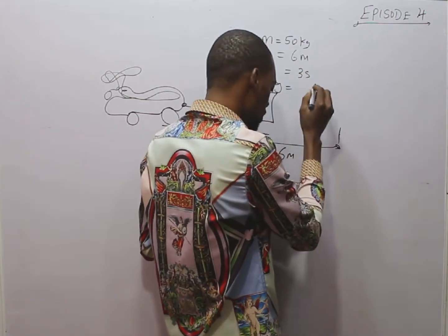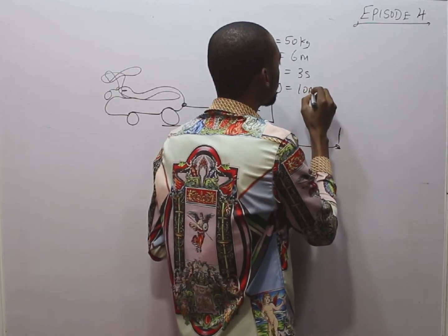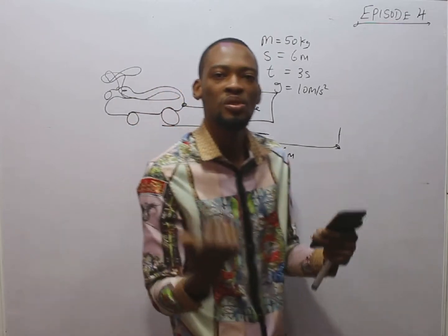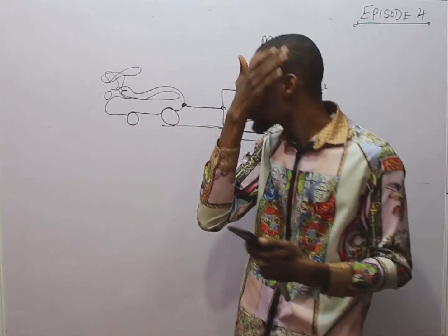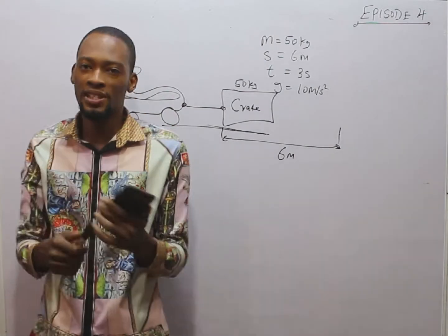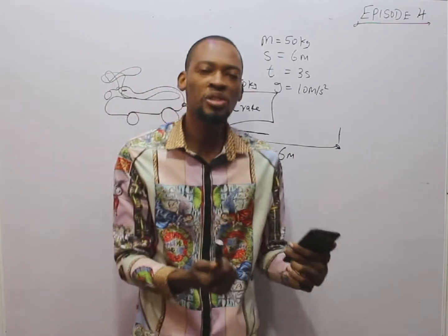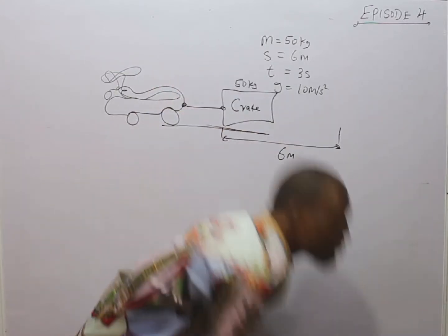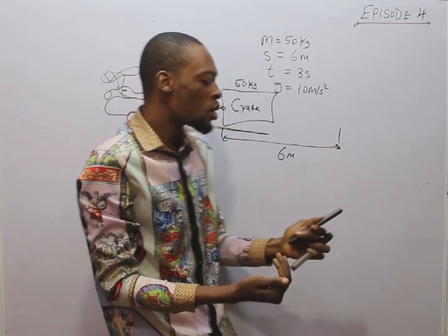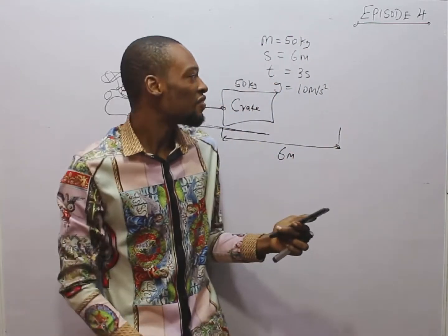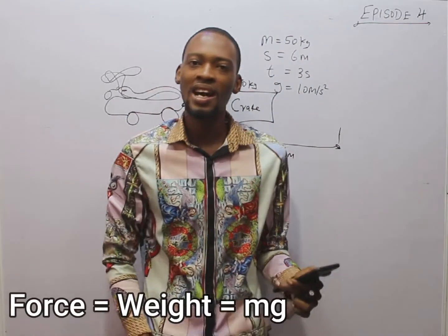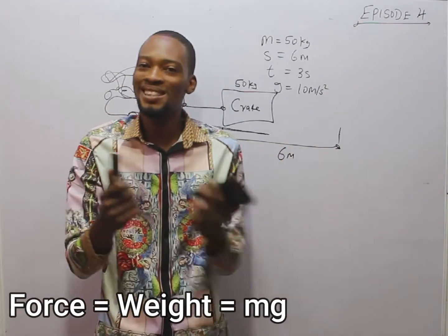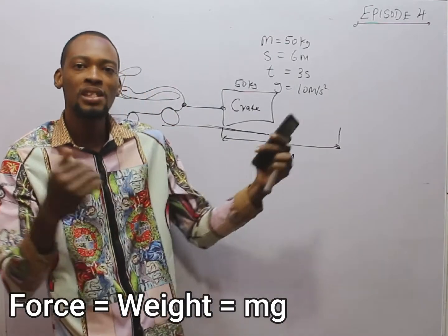And g = 10 meters per second squared. What is g? G is simply acceleration due to gravity. Acceleration due to gravity is a force that brings all objects down. According to Newton's law of gravity, anything that goes up will surely come down. The force bringing everything down is referred to as the force of gravity, approximated as 10 meters per second squared.